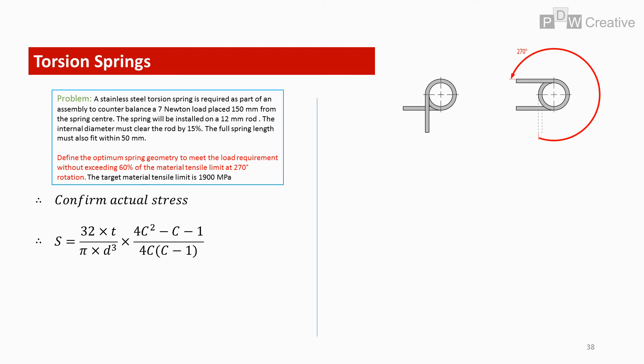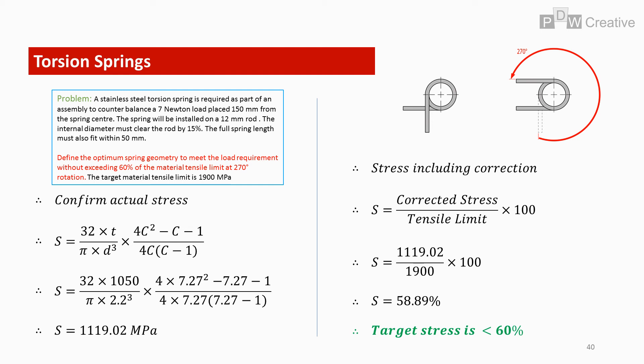Let's get rid of the placeholder stress and replace it now. Our actual stress, as always, includes correction. Based on the revised wire diameter and index, stress is 1119.02 MPa. Let's check this is below the target. Corrected stress over tensile limit times 100 gives us 58.89% stress at 270 degrees. So we can move forward with the design.